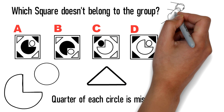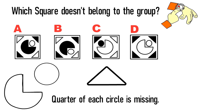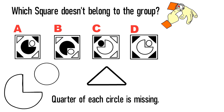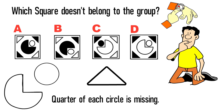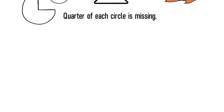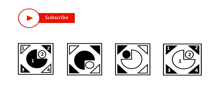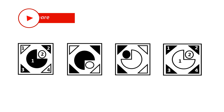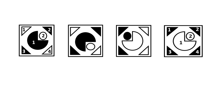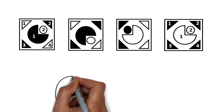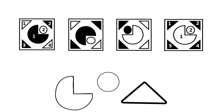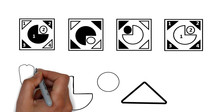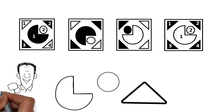Give yourself 5 to 10 seconds to see if you can come up with the answer. The key to solving this challenge is to detect the pattern — this is the skill that you need to develop to be successful in the test. Because there are two shapes present in this question — triangles and circles — you should try to detect a pattern among the triangles and then among the circles. In this particular question, there is only one pattern: the pattern of the triangles.